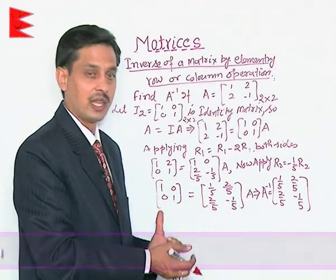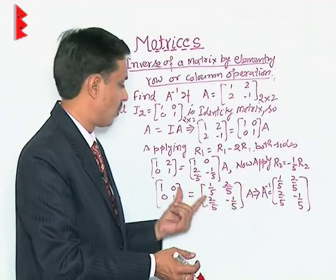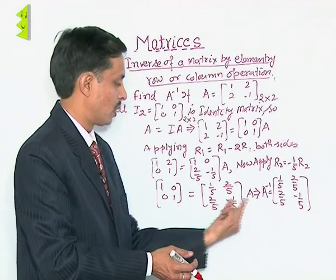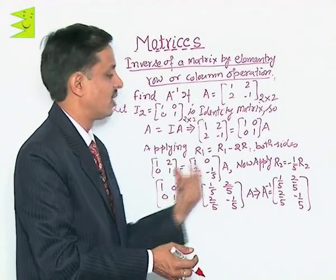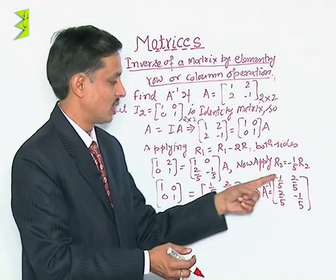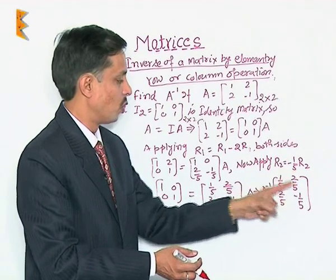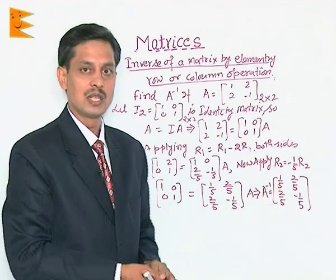So, ultimately what we are getting, we are getting inverse of A is this matrix because the product of these two is identity matrix. Hence inverse is given by [[1/5, 2/5], [2/5, -1/5]].